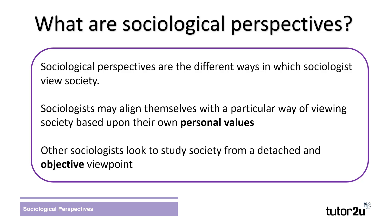There are a number of different sociological perspectives, and sociologists may align themselves with a particular way of viewing society based upon their own personal values. For example, if they believe society is unequal or that individuals are able to act in their own interests. Other sociologists view society from a more detached and objective viewpoint, using more scientific methods and trying to draw conclusions from what they observe.